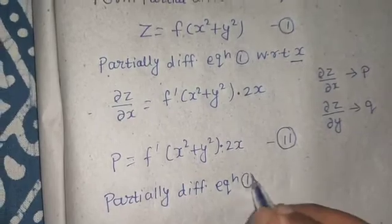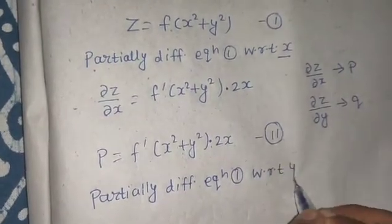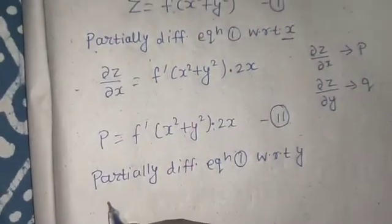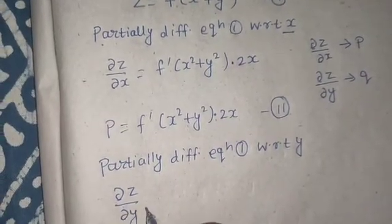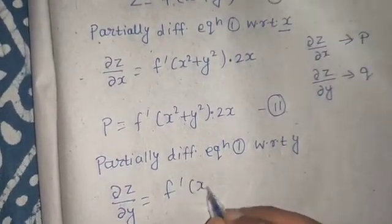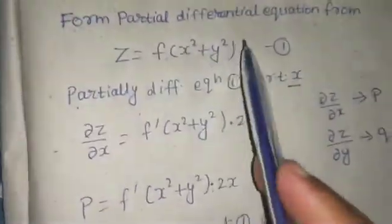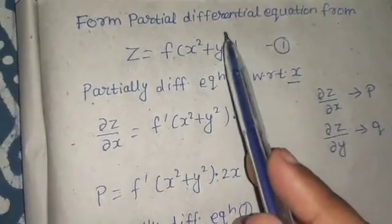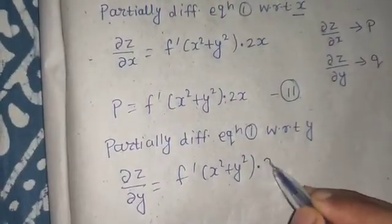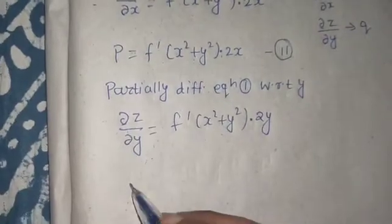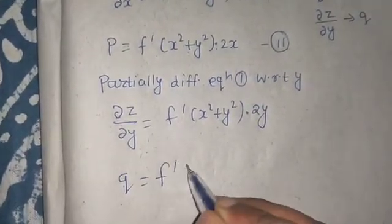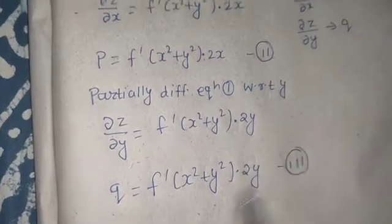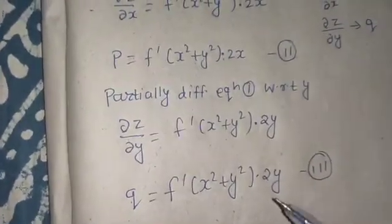Similarly, partially differentiate equation one with respect to y, treating x as a constant. Del z by del y equals f dash(x² + y²) — no change there. Going inside, x² is constant so its derivative is zero, and the derivative of y² is simply 2y. This is your q, so q equals f dash(x² + y²) times 2y. This is equation number three.